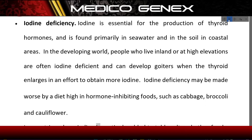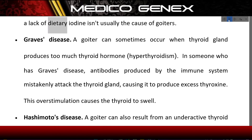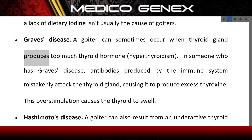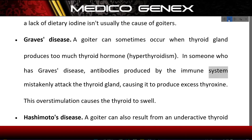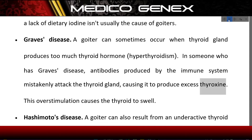In countries where iodine is routinely added to table salt and other foods, a lack of dietary iodine isn't usually the cause of goiters. Graves' disease: A goiter can sometimes occur when the thyroid gland produces too much thyroid hormone. In someone who has Graves' disease, antibodies produced by the immune system mistakenly attack the thyroid gland, causing it to produce excess thyroxine. This overstimulation causes the thyroid to swell.